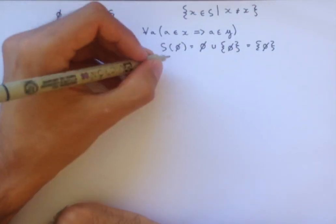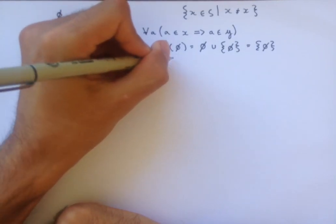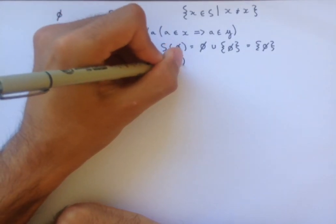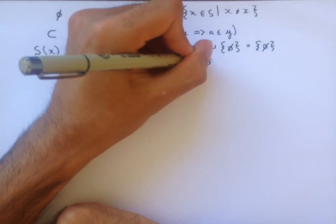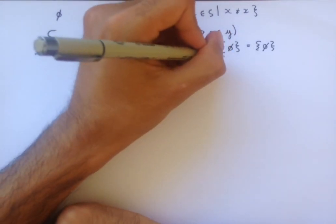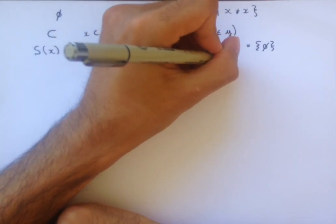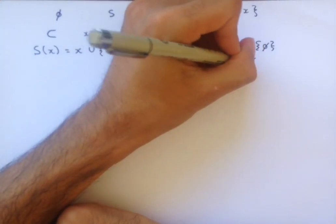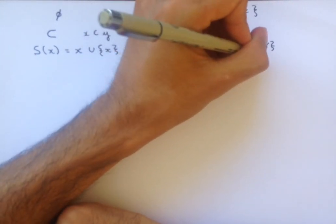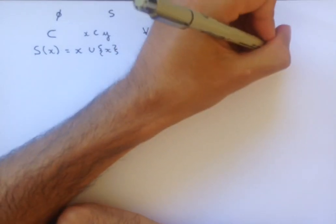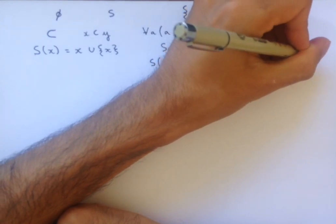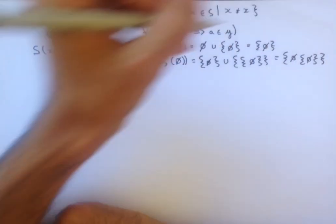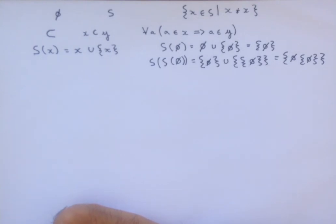Another example is S of S of the empty set, which equals the set containing the empty set unioned with the set containing the set containing the empty set, which equals the set containing the empty set and the set containing the empty set. It's much easier to see what's going on than to hear what's going on in this case.